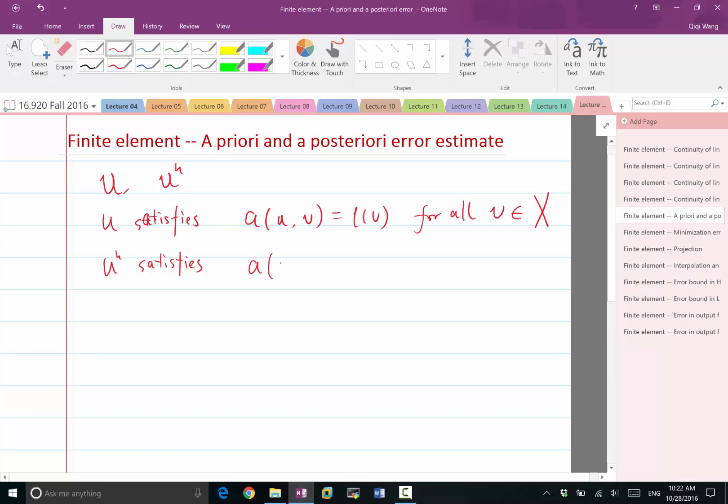But another important thing is that UH is only going to satisfy the weak form for a subset of Vs